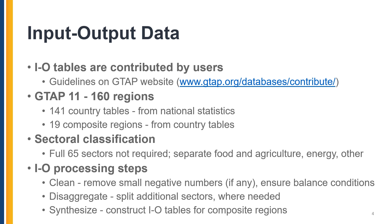When disaggregating energy, we use data from the International Energy Agency, and for other sectoral splits we rely mostly on the cost structure from other input-output tables that have that level of sectoral detail. Finally, the composite region's input-output tables are the linear combination of proxy input-output tables of the individual countries. These proxies are selected from the input-output tables that exist within the same geographical region, and we use macroeconomic data to ensure that proxy tables reflect the macroeconomy of the individual countries prior to aggregation into a composite input-output table.